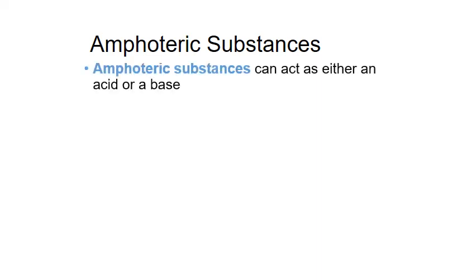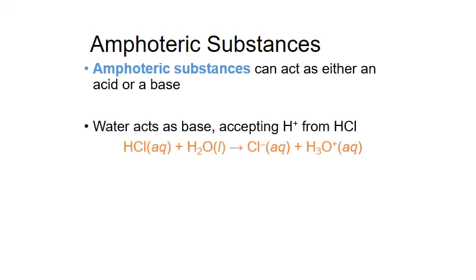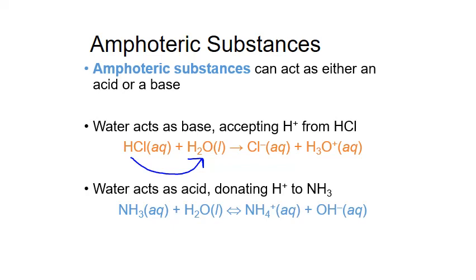The Bronsted-Lowry definition also allows for substances that can act as both an acid or a base. These are known as amphoteric substances, and water is a classic example. In the two reactions we just looked at, water acted as a base for hydrochloric acid by accepting a proton, and also acted as an acid for ammonia by donating a proton. Whether water donates or accepts a proton depends upon what is dissolved in solution with it.